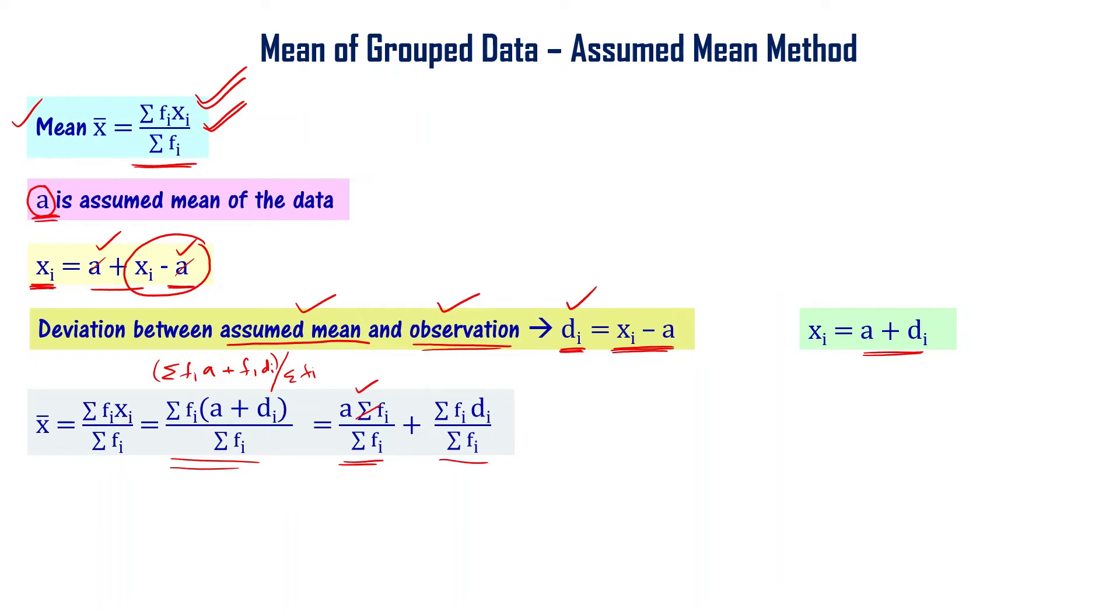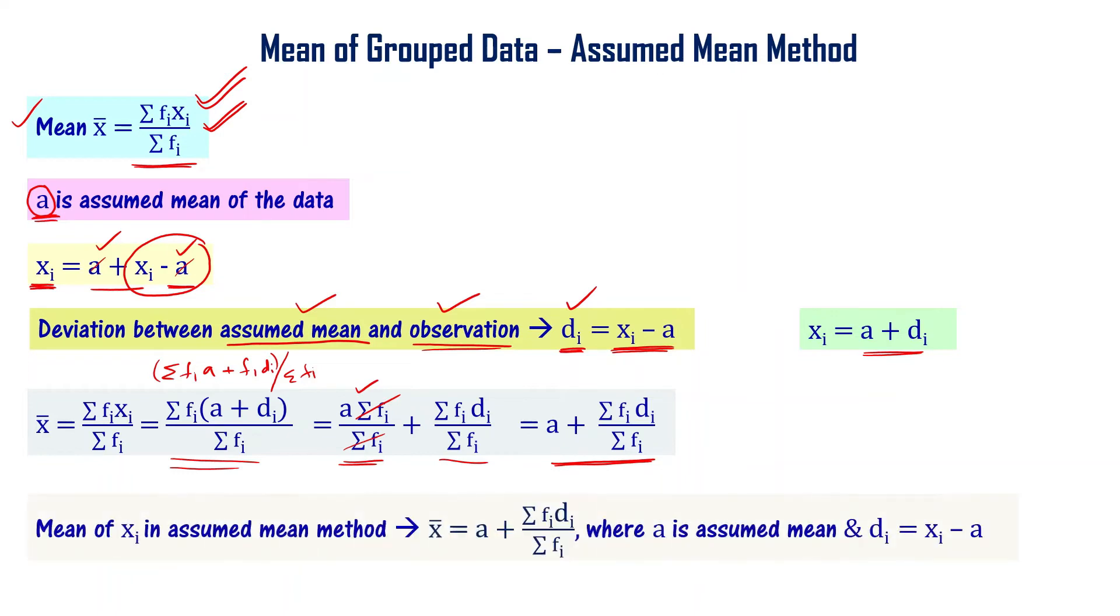Since Σfi cancels in the first term, this expression becomes x̄ = a + Σfidi / Σfi. This is the formula for the assumed mean method: x̄ = a + Σfidi / Σfi, where a is the assumed mean and di is the deviation, xi - a.